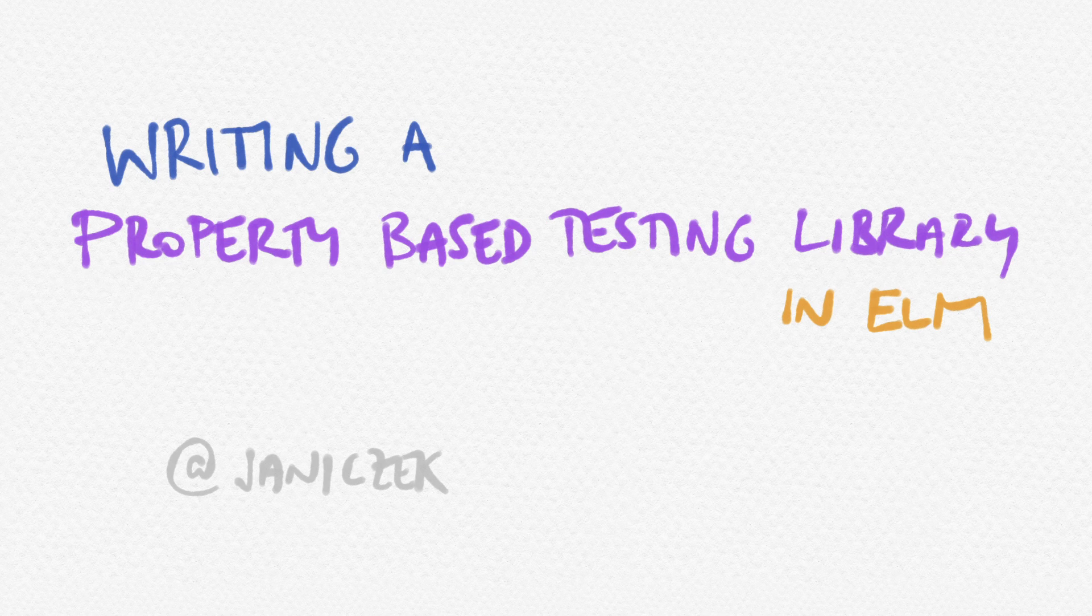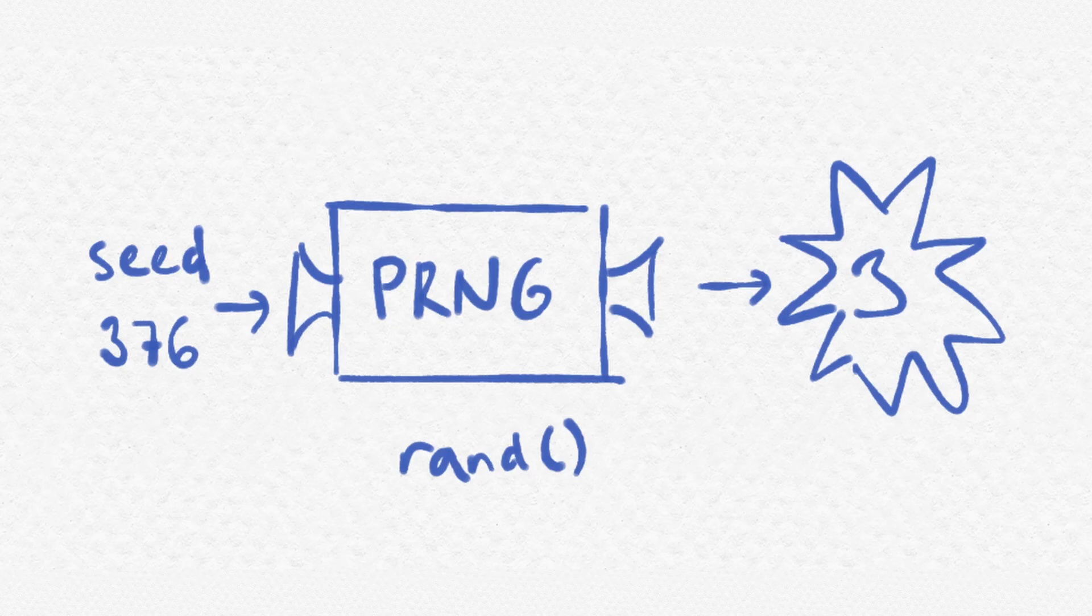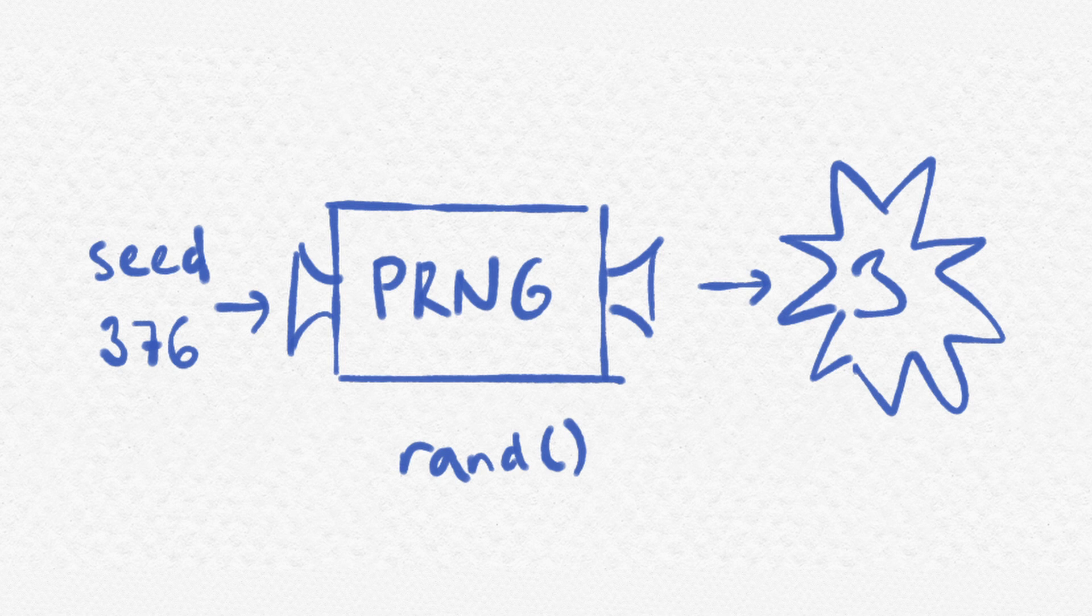The only thing you will need from your host language will be a pseudorandom number generator that you can seed with a specific value and get deterministic results back. Same seed in, same output out. You will need to be able to generate integers and floats in this way.